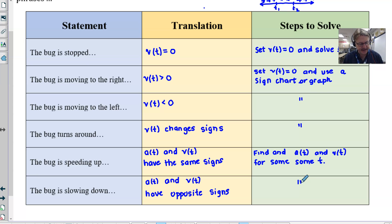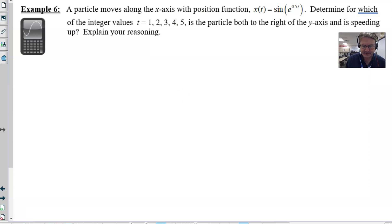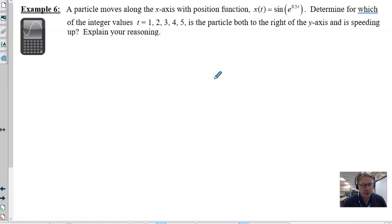Let's go ahead and take a look at our example 6 that uses some of these ideas. Again, this is a calculator-assisted question. It says a particle moves along the x-axis with a position function defined by x(t) equal to the sine of e to the 0.5t. Determine for which of the integer values t equal 1, 2, 3, 4, and 5 is the particle both to the right of the y-axis and is speeding up. And it says to explain your reasoning. Now, as I said before, we have a calculator-active question here thanks due in part to this really nasty-looking position. There's a lot of ways that you could do this problem with the calculator, but I would really like to investigate the most efficient way. And it can be performed on most any model of a graphing calculator. I'm going to show you on the TI-Inspire and maybe talk about how a TI-84 could handle this.